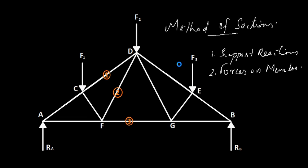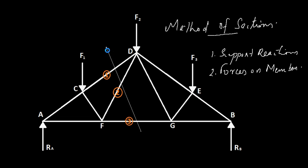Taking into account these three forces and the distances provided, you first find the reactions RA and RB. Then what you do is draw a line through the members in which you need to find the forces. It is to be noted that you can only draw a line through a maximum of three members with unknown forces.